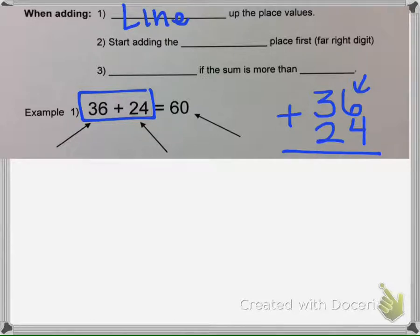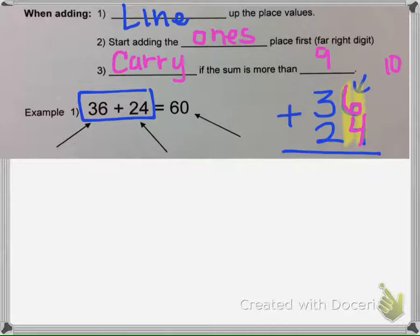Then step two is we're going to start here and start adding the ones place first. So if we take 6 and add 4 to it, that's 10. But we have to do what's called carrying. You're going to carry if the sum is more than 9. So 6 + 4 is 10. We're going to take the ones here, and then we're going to take the 1 here and carry it over here. So now we have 3 + 2, but we have that 1 that we carried over, which makes 6.